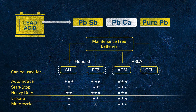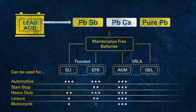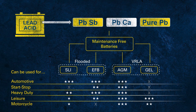AGM provides outstanding performance for all applications, including high-demand electrical systems of luxury cars, SUVs, or fully equipped long-haul trucks with an electrical parking cooler. Gel batteries are not very common in automotive applications but are often used in leisure or motorcycle applications.